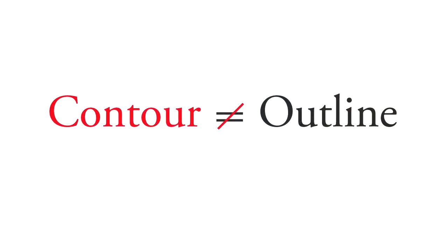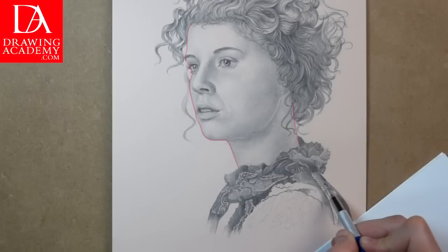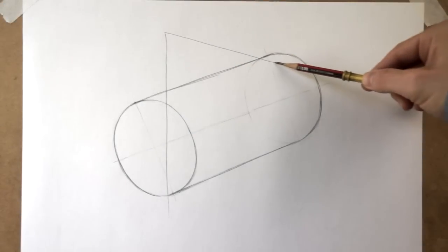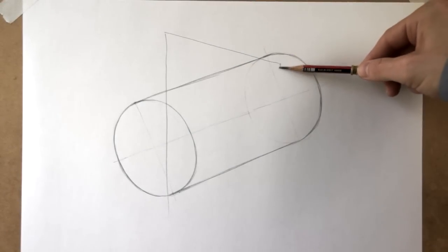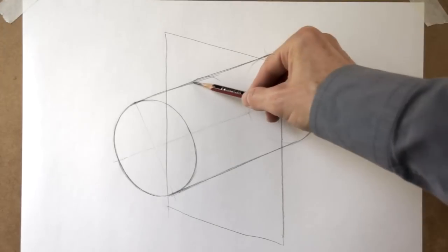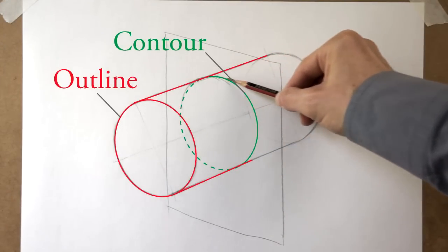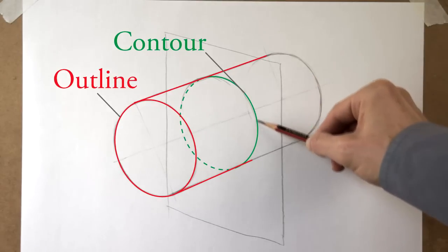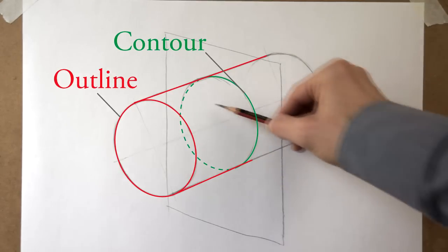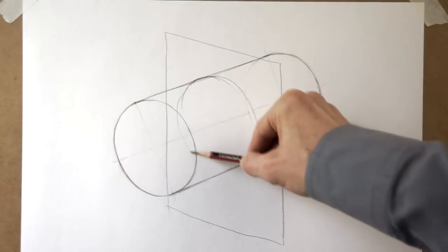A contour is not the same as an outline. An outline is the visible outer edge of an object. Contours, however, can be found anywhere on the object. Here's how to find a contour. Imagine that a flat plane slices through a given object. The cross-section of the plane and the object, the line formed from where the object's surface and the plane touch, is the contour. Change the plane's location or angle and you'll get another contour.